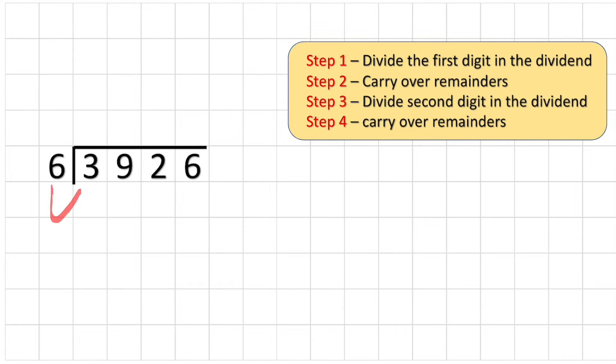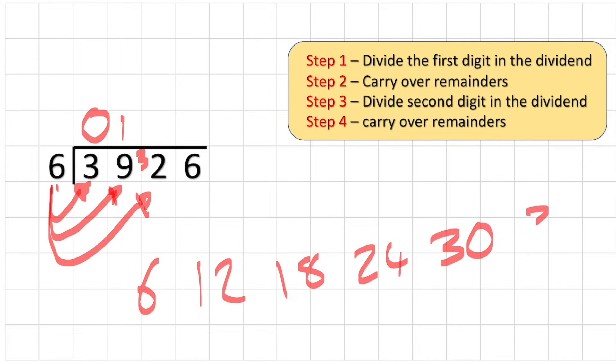So first question says how many sixes are there in three? Can I take any group of six away? No, so I have a zero. How many groups of six in nine? I have one. And then how many left over? What's the difference between six and nine? Three.